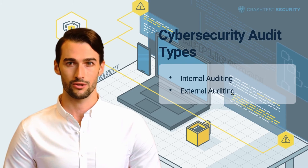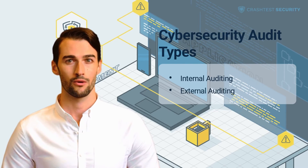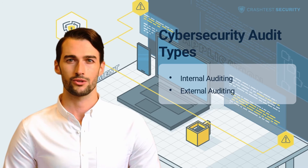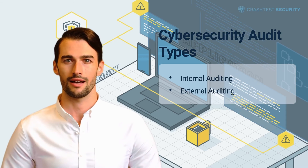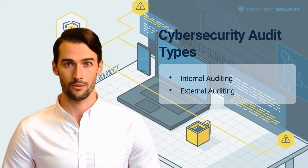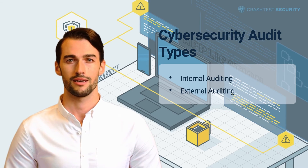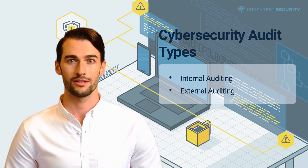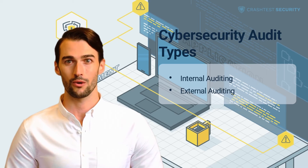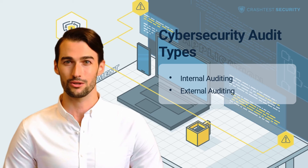Audits in cybersecurity are categorized into internal and external types. In internal auditing, the in-house team performs internal audits to evaluate the network's internal controls, policies, and cybersecurity processes. A robust internal audit foundation helps assess existing and required security measures while assisting the cybersecurity audit team in understanding flaws in security implementation. Benefits of performing internal audits include cost-friendly security evaluation, more control over the auditing process, and the ability to be customized to suit security systems in use.